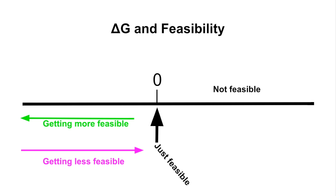A little graphic there just to show you the link between delta G and feasibility. So the further away from zero on the negative side, processes become more feasible. The closer they get to zero, it's getting less feasible. When it hits zero, it's just feasible, it's just becoming feasible. So anything after zero, in other words anything positive, is not feasible.